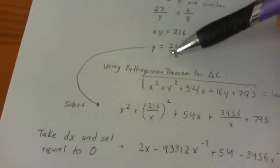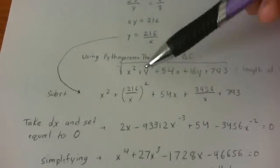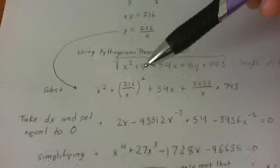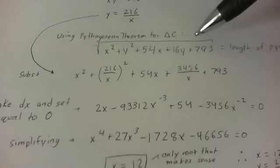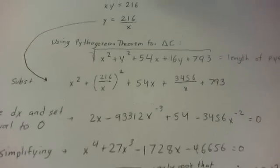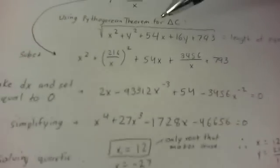Okay, I substituted the value of Y in this equation and I got the following: X squared plus 216 over X squared plus 54X plus 3456 over X plus 793. So that was just a little bit of math and some calculation.